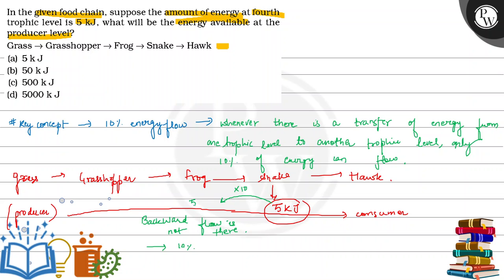From 5 kJ, we will get 50 kJ. From 50 kJ, we will get 500 kJ. And from 500 kJ, we will get 5,000 kJ.